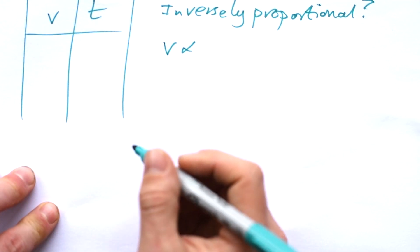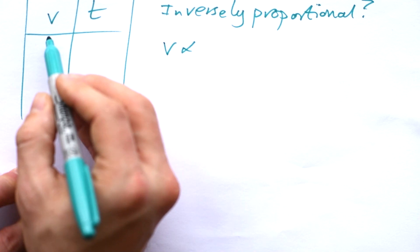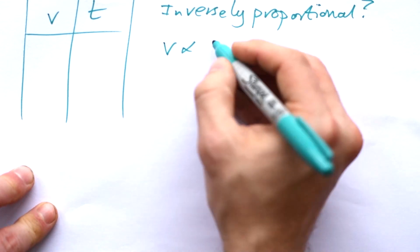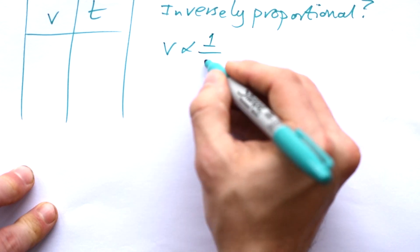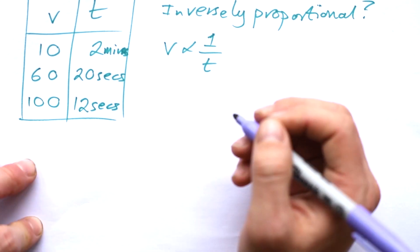So what if we're being asked to prove if two things are inversely proportional instead? Let's take speed v and time t. We can't say that v is proportional to t in this situation, but if they're inversely proportional, then we say it's proportional to 1 over t. So basically, this is the opposite of what we had earlier. What do you think we're going to do?